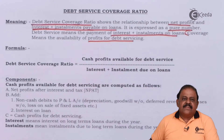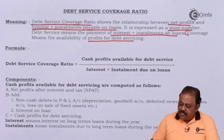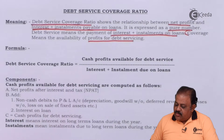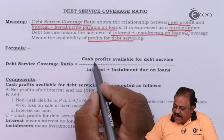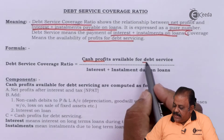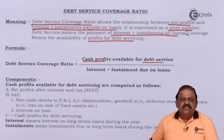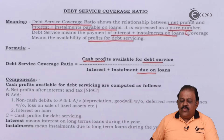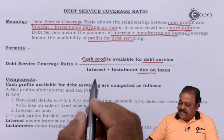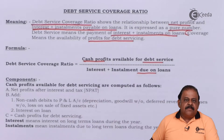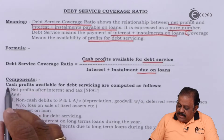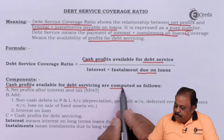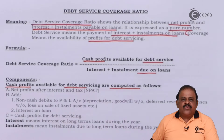Debt service means the payment of interest plus installment on loans. Coverage means the availability of profits for debt servicing. Formula: Debt Service Coverage Ratio = Cash profits available for debt services divided by interest plus installment due on loan, that is interest plus part of principal.